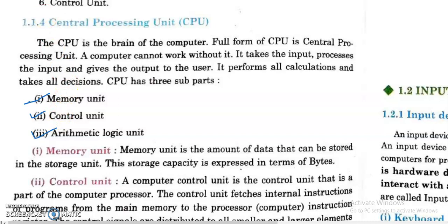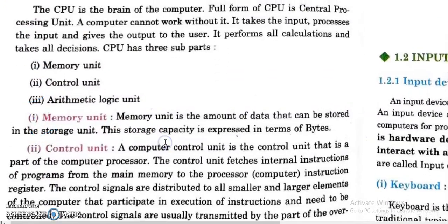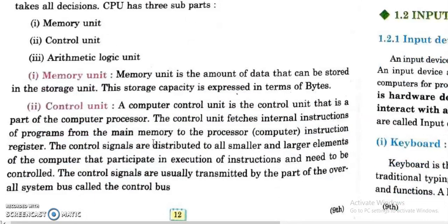Let's study about the memory unit first. The memory unit is the amount of data that can be stored in a storage unit — whatever can be stored into a computer's memory is the storage unit. The storage capacity is explained in terms of bytes, and the least unit of storage is a byte.